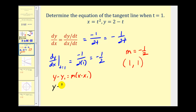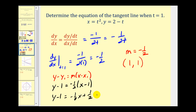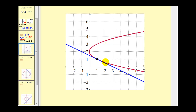So we'd have y minus one equals negative one half times x minus one. Distributing and solving for y, we get negative one half x plus one half. Adding one to both sides, y equals negative one half x plus three halves. Let's check this graphically. Here we have the graph of our plane curve in red. Here's the point of tangency, which is (1, 1), and here's our tangent line. It looks good.